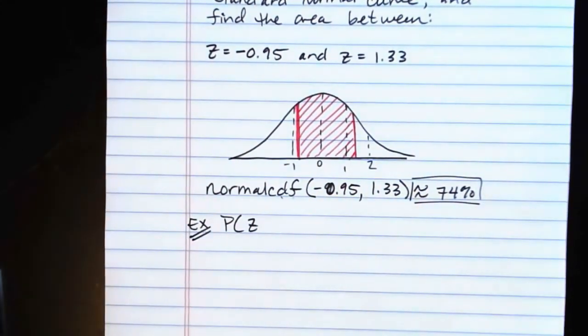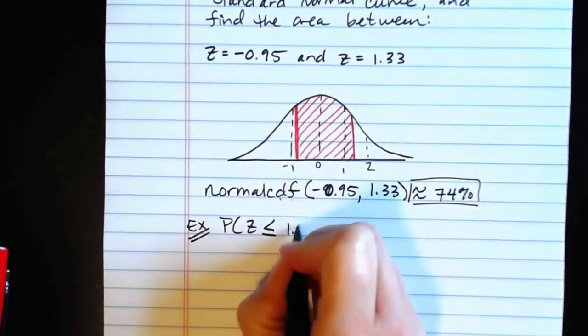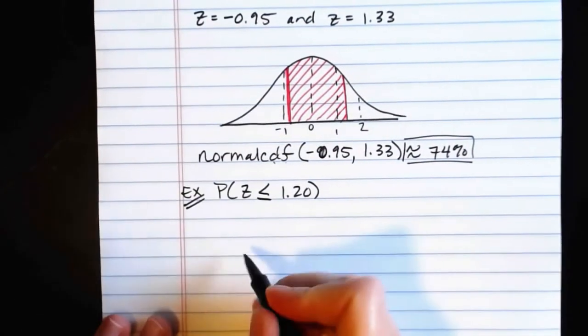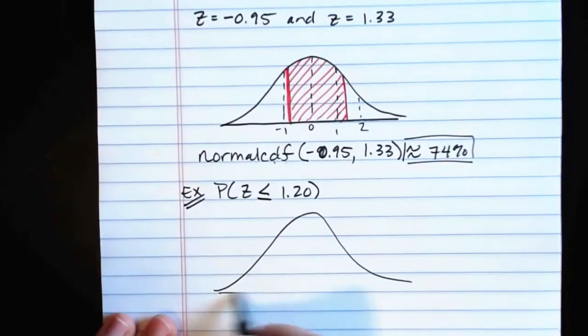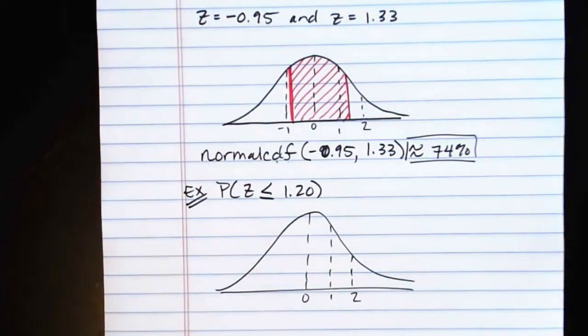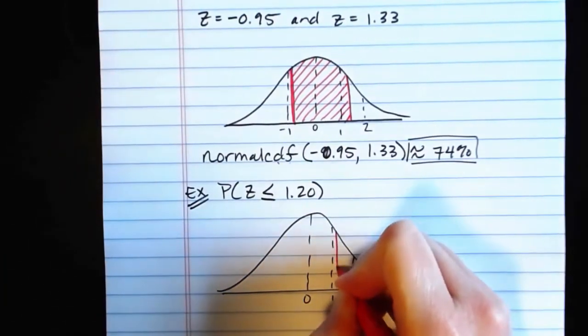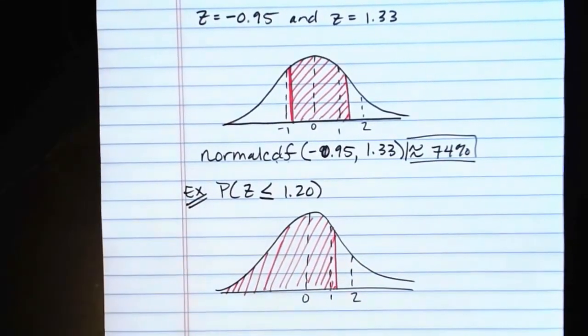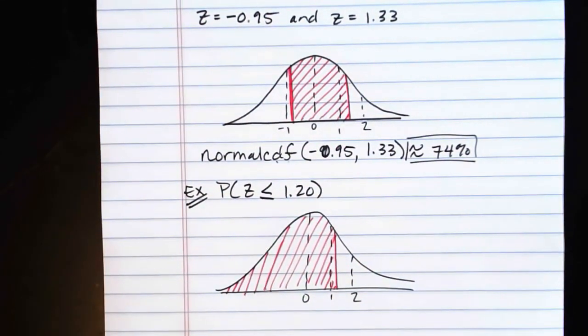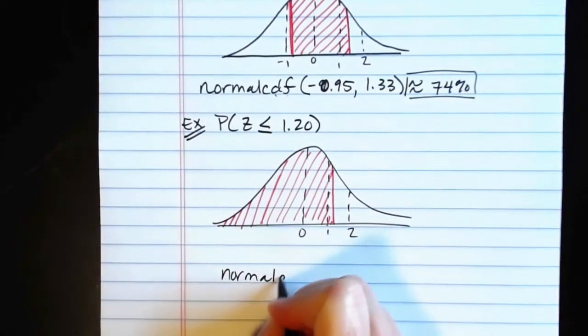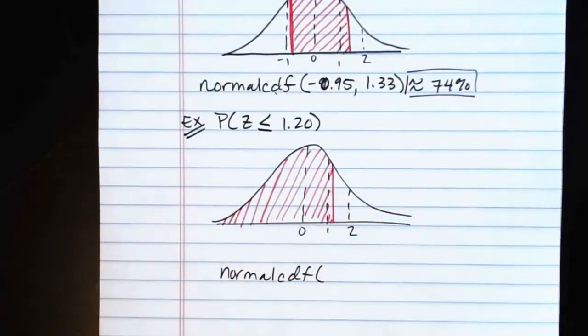Let's say I wanted to find the probability, capital P, of a Z-score being less than or equal to 1.20. When I draw my sketch here, 0, 1, 2, 1.20 is going to be right about in here. And then I'm going to shade all the way to the left. Now, technically, this distribution goes all the way to negative infinity on the left. But if you try and put into your calculator normal CDF negative infinity comma 1.20, your calculator gets a little angry about that.